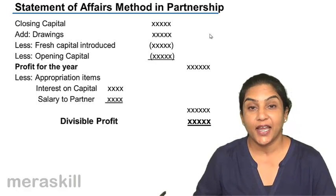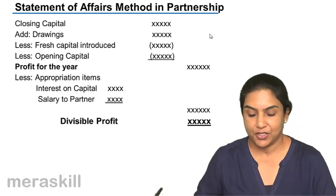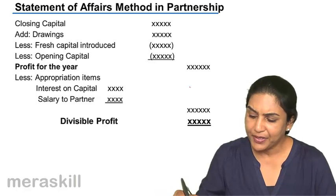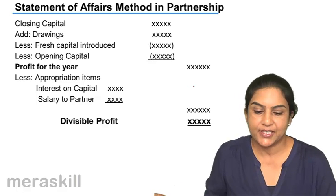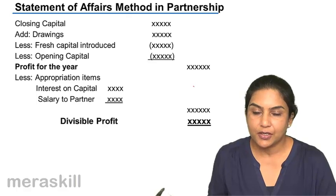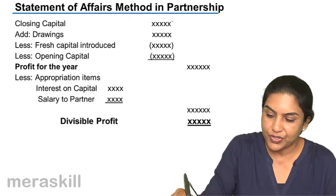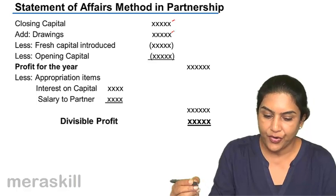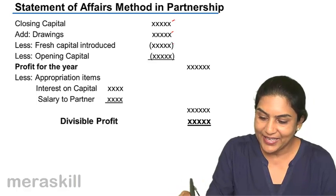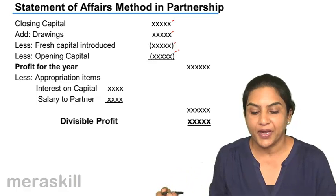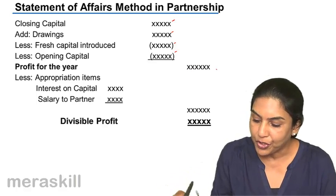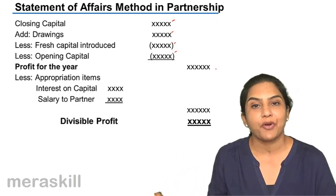Statement of affairs method in partnership. Now why would it be different in case of partnership? So there is a closing capital, add drawings, less fresh capital introduced, less opening capital. This is exactly what we had done before, and therefore what you get is the profit for the year.